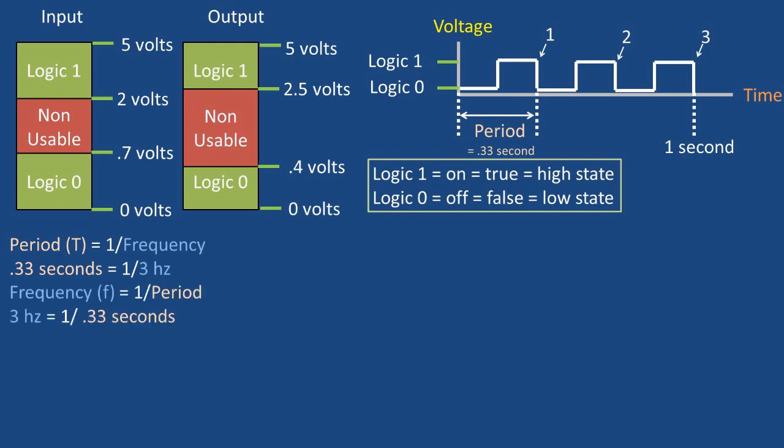Frequency, on the other hand, is the number of cycles, or repeats, of the wave in one second. So being there are three cycles in one second, there are three hertz, or three cycles a second. If you have the frequency, you can find the period by taking one over the frequency. If you have the period, you can find the frequency by taking one over the period.